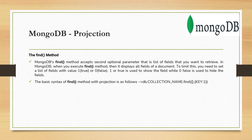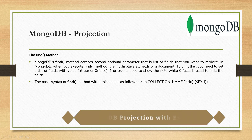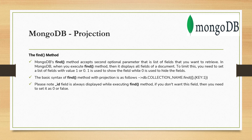The basic syntax is db.collectionName.find(). If you specify empty curly braces, it selects all fields. If you specify a key with value 1, you are selecting that field; with value 0, you are not selecting it. One important thing to keep in mind: the _id field is always included by default — its value is 1 or true. If you don't want to select the _id field, you need to explicitly set it to 0 or false.